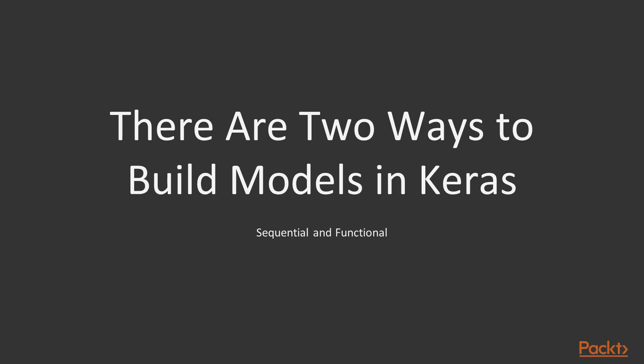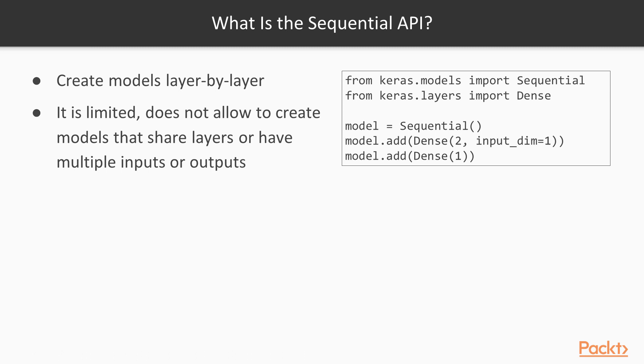Now within Keras there are two ways to build a model: sequential and functional. In our prior videos we have used the sequential API, and this is the most simple way of creating models within Keras. The sequential API allows you to create models layer by layer in a sequence, and this works for most problems.